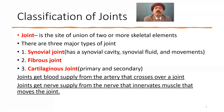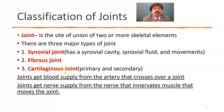What is a joint? A joint is a site of union of two or more skeletal elements like bone. There are three major types of joints: synovial joint, fibrous joint, and cartilaginous joint.